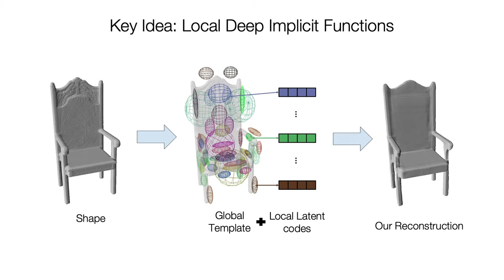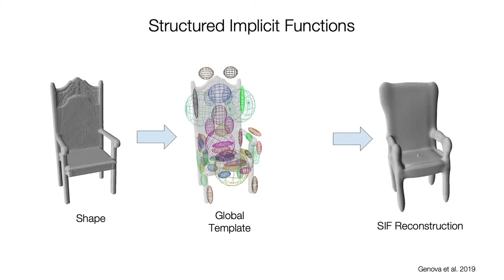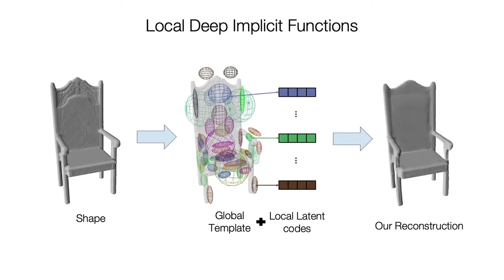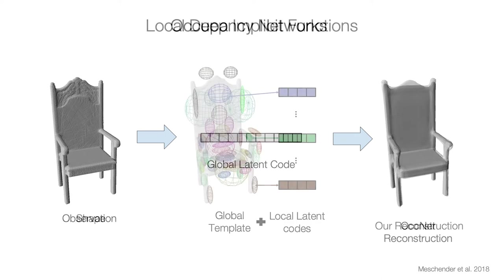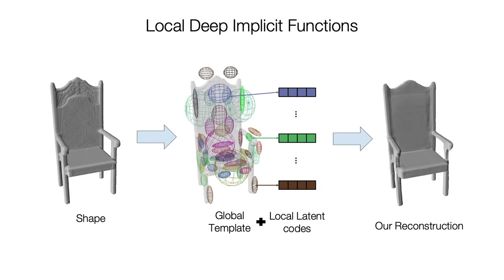An LDIF is a set of deep implicit functions localized in space with consistent structure. LDIF is similar to SIF because it decomposes shape into local regions, but it also attaches a latent vector to each region. LDIF is similar to a deep implicit function because it decodes latents to a function over space, but distinct in that the function is local and must only represent fine details.